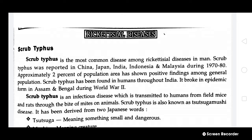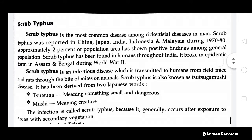It has been derived from two Japanese words. It is an infectious disease which is transmitted to humans when field mice got infected with the bite of mites, and these mice may spread the infection to humans. It is the most common disease among rickettsia diseases in man, and it was reported in China, Japan, India, Indonesia, and Malaysia during 1970 to 1980. It broke out in epidemic form in Assam and Bengal during World War II.